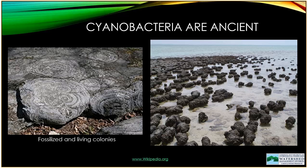Cyanobacteria are ancient organisms. They've been around for millions of years. When people refer to the primordial soup present on this earth millions of years ago, that probably was a lot of cyanobacteria, and it probably didn't look too different from what a dense cyanobacteria bloom looks like now. The image on the left is fossilized cyanobacteria colonies from a location in Australia. The image on the right is also from Australia — those are living colonies, and there is very little difference between the live colonies on the right and the fossilized colonies on the left.